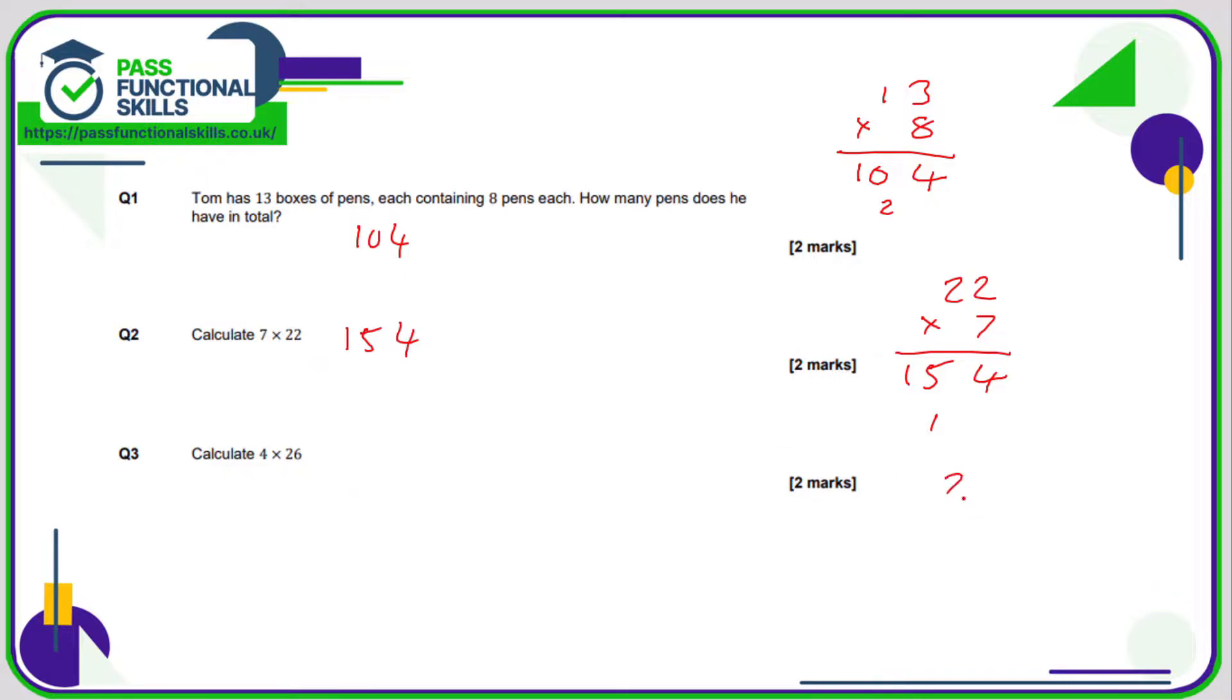4 times 26. 26 times 4. If you're multiplying two numbers where there's a different number of digits, I'd always put the number which is fewer digits on the bottom, so I'd do 4 on the bottom, not 26 on the bottom. 4, 6's are 24, so that's 4 carry the 2. 2, 4's are 8, plus the 2 is 10, so that is a total of 104.